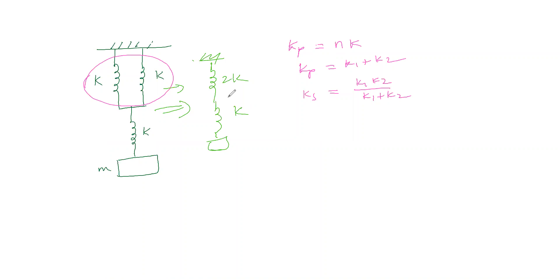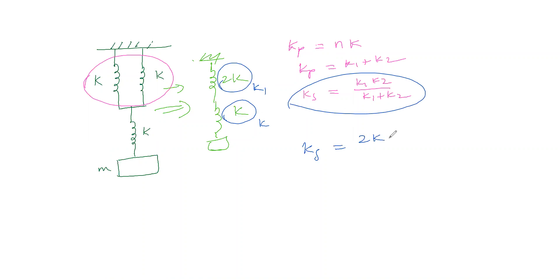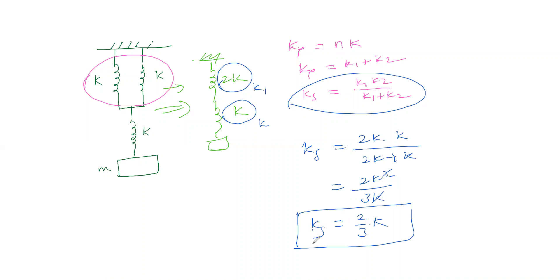Taking k1 = 2k and k2 = k, substituting in the series formula: ks = (2k × k) / (2k + k) = 2k² / 3k = 2k/3. In series combination, the effective force constant must be lower than the lowest individual constant. Here the lowest is k, and 2k/3 is indeed lower than k, which confirms our result.